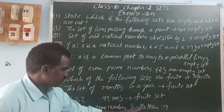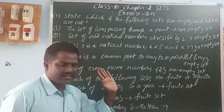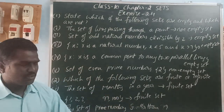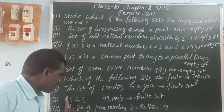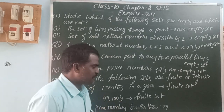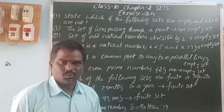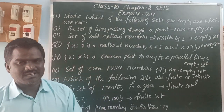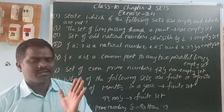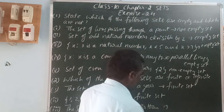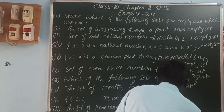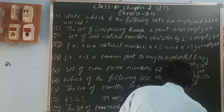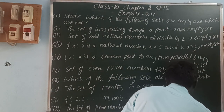Next: the set of prime numbers smaller than 99. The prime numbers below 99 are: 2, 3, 5, 7, and so on up to 97. This is also a countable set, so therefore it is a finite set.